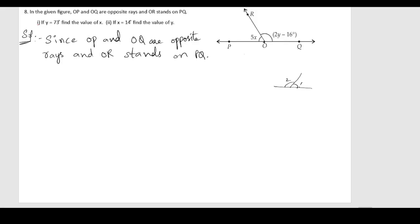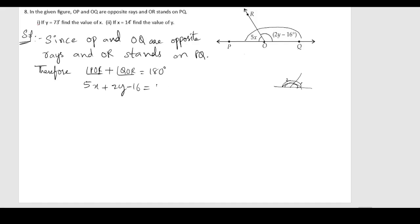We know that if we have two angles forming a linear pair, here also angle POR (which is 5x) and angle QOR (which is 2y minus 16) are forming a linear pair. So we write: angle POR plus angle QOR equals 180 degrees. Substituting: 5x plus 2y minus 16 equals 180 degrees.